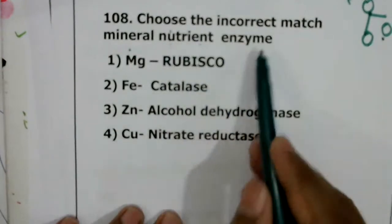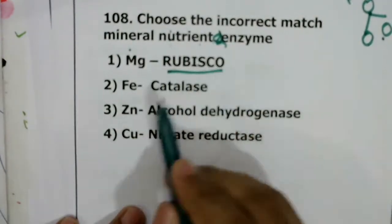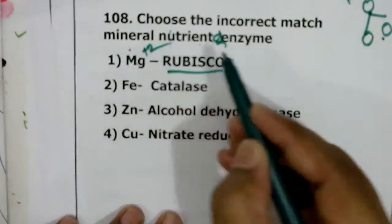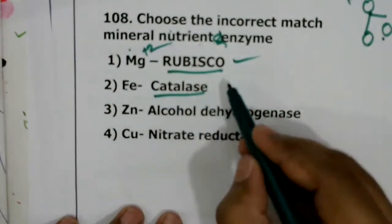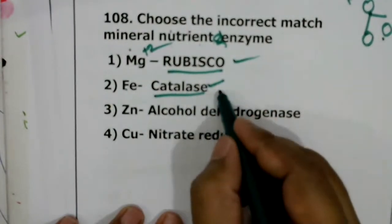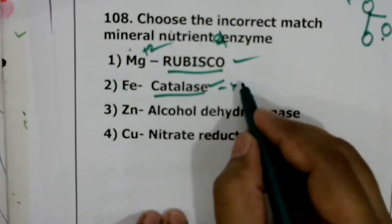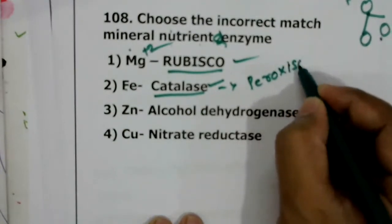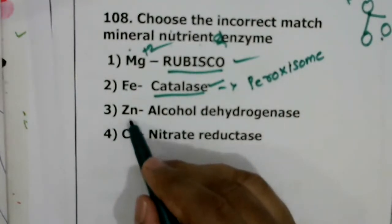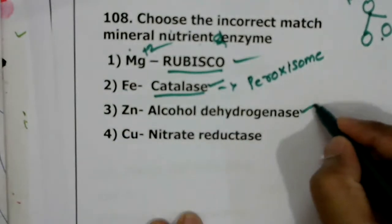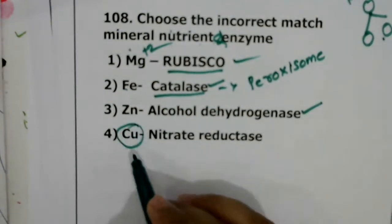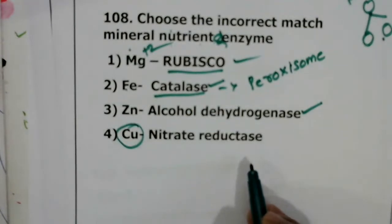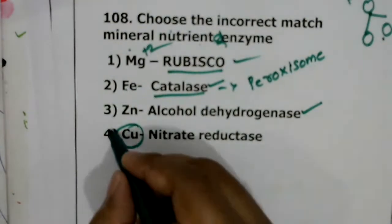Question 108: choose the incorrect match of mineral and enzyme. Rubisco is activated by Mg2+ — correct. Iron is responsible for activation of catalase in peroxisomes — correct. Zinc activates alcohol dehydrogenase — correct. Copper activates nitrate reductase — this is wrong. Nitrate reductase is activated by molybdenum, not copper. So the incorrect match is copper-nitrate reductase.